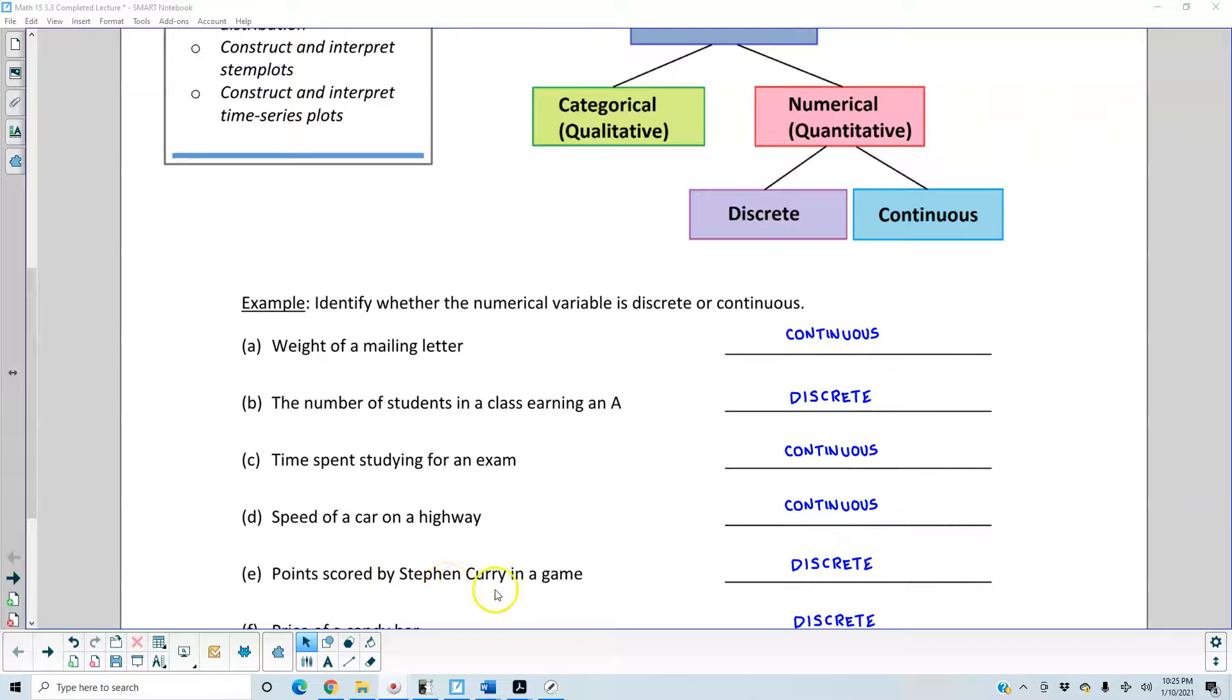Points scored by Stephen Curry in a game. This is discrete because you can count his points at the end of the game to find out how many he scored. 'Scored' is the key word here because that means he completed the game, and you can count the amount of points that he scored.